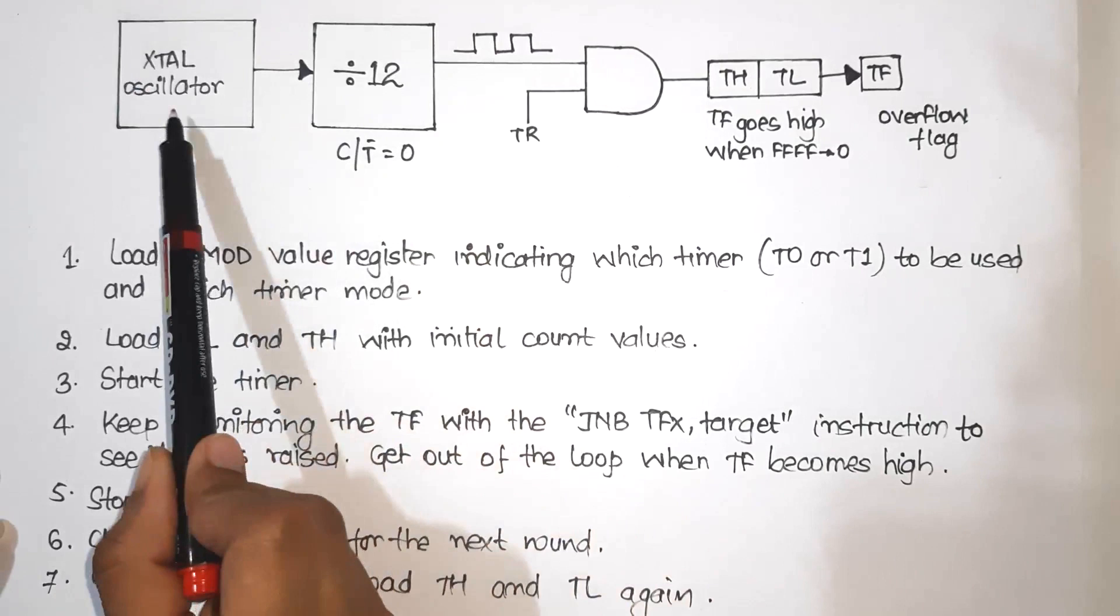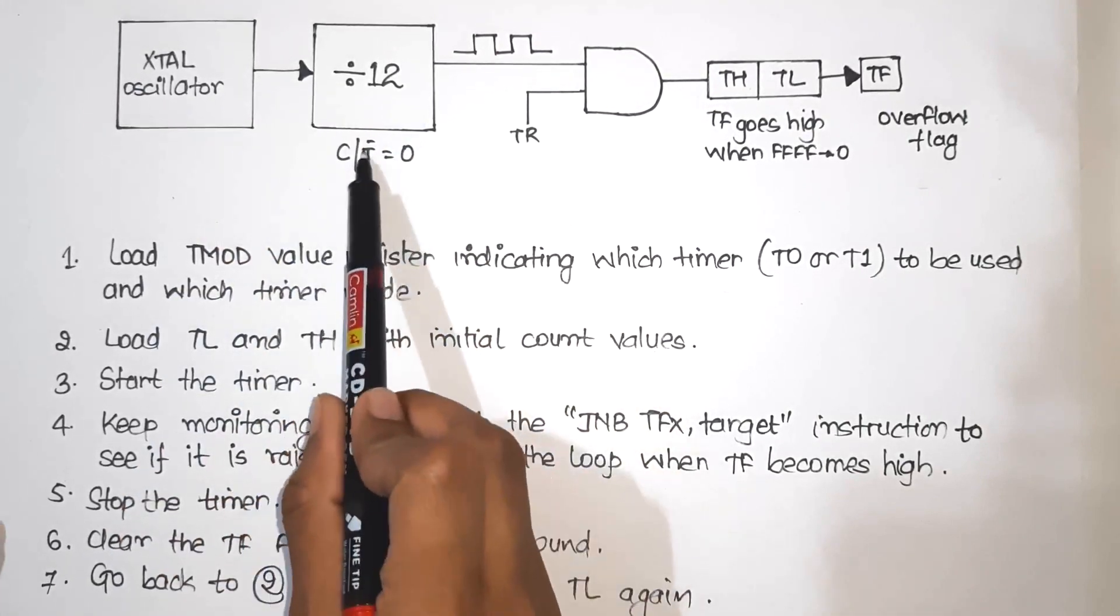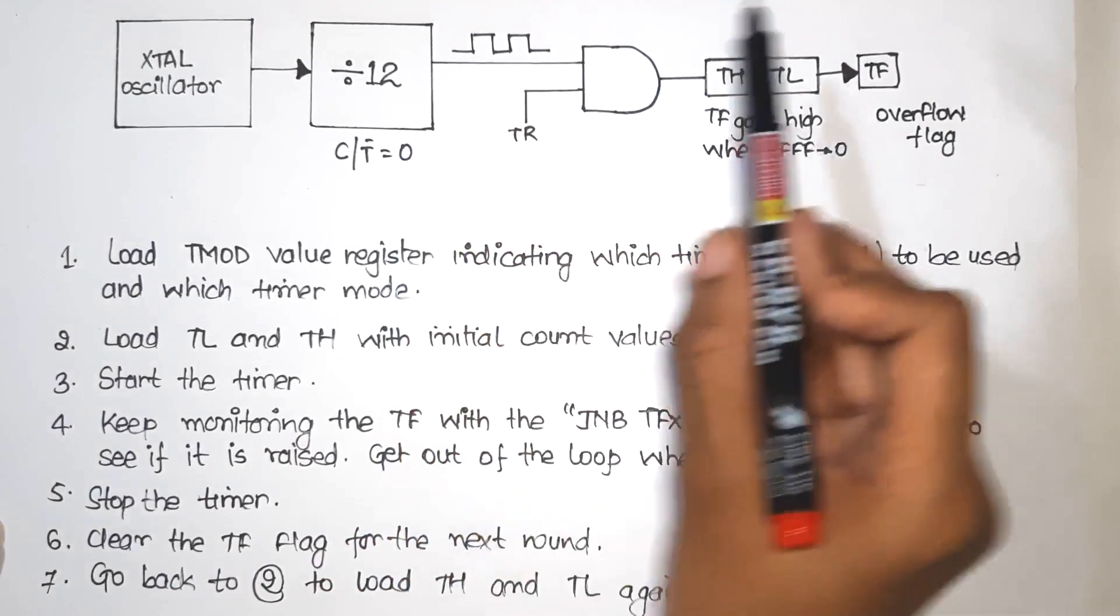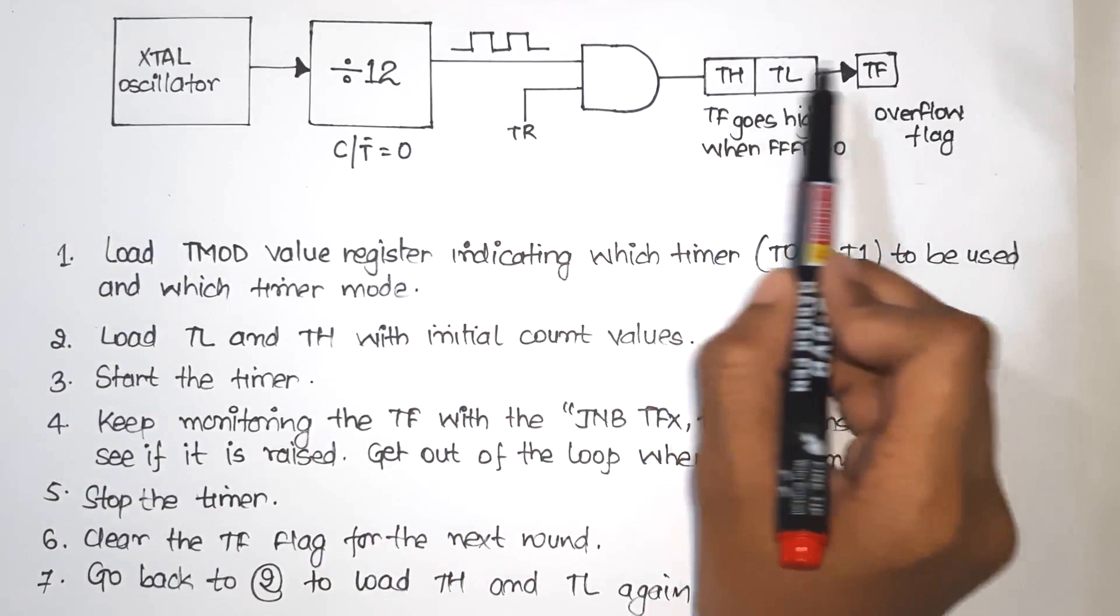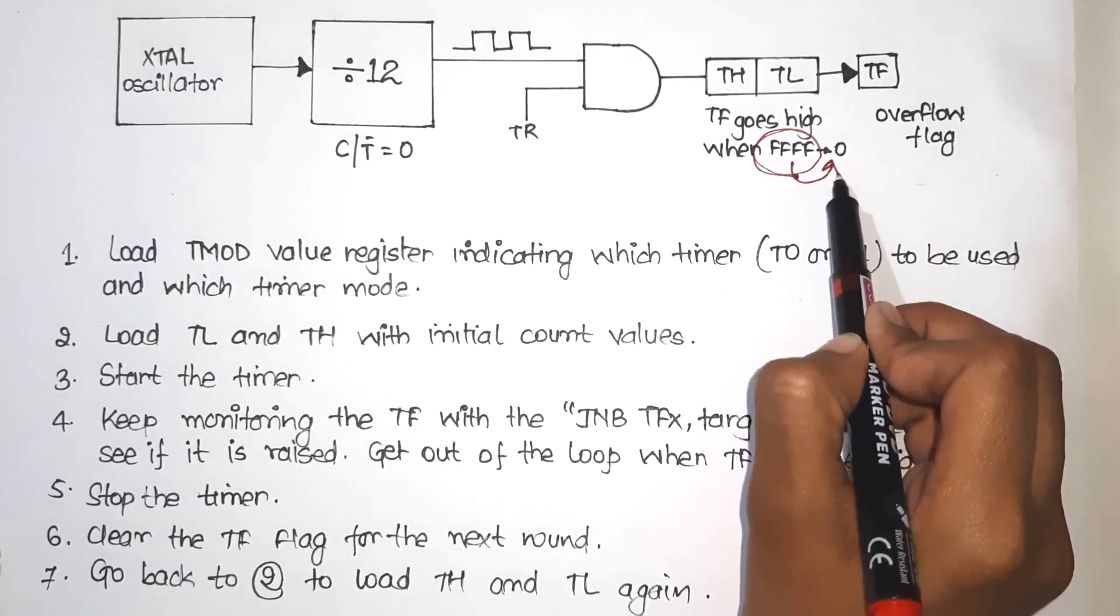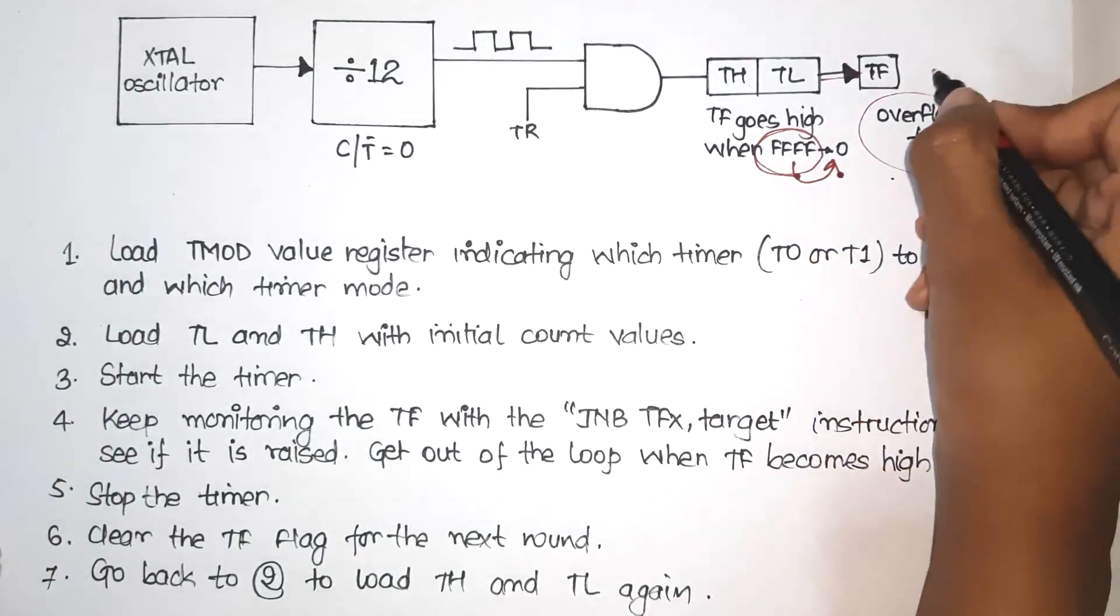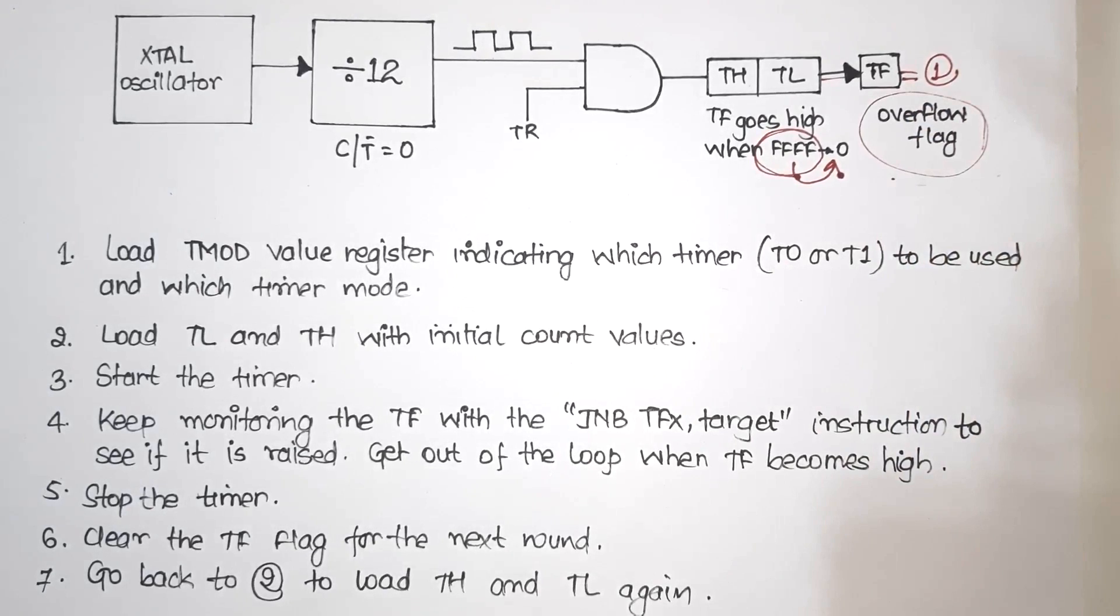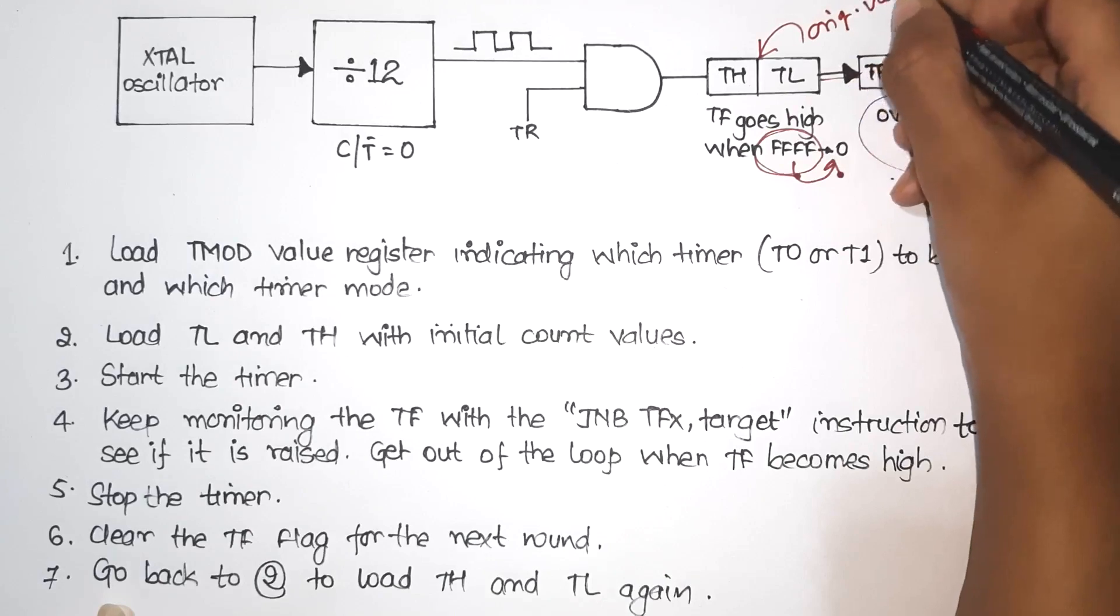So this is a small diagrammatic representation. So we have seen oscillator, frequency divided by 12. Now C/T bar is equal to 0 because we are using timer. After giving this, we had to start the timer. After starting the timer, we will load the original value in TH and TL. Once it reaches its maximum value, that means FFFF, then it will roll over to 0. And then the TF flag, that means the overflow flag, will be raised. It will be equal to 1. After that, either clear or if we want to repeat the process, then we will load the original values in TH and TL.